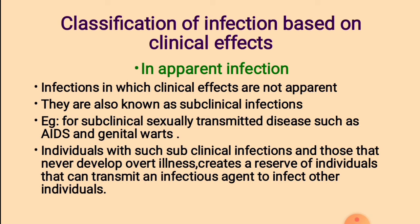Classification of infection based on clinical effects. 1. Inapparent infection: Infections in which clinical effects are not apparent are known as inapparent infections; they are also known as subclinical infections. For example, in subclinical sexually transmitted diseases such as AIDS and genital warts, those that never develop overt illness create a reserve of individuals that can transmit the infectious agent to infect others. In the case of AIDS, no illness is produced in initial cases, yet the individual can transmit the infectious agent to infect others.